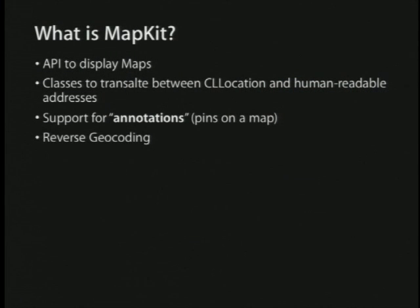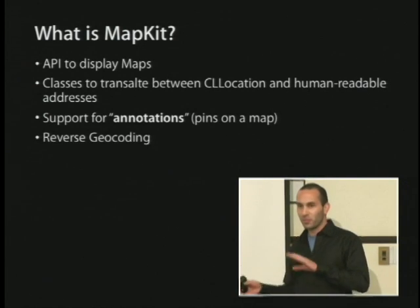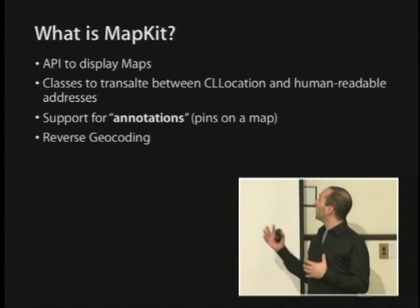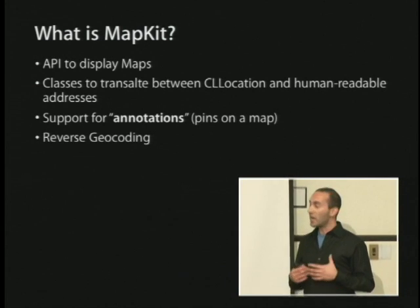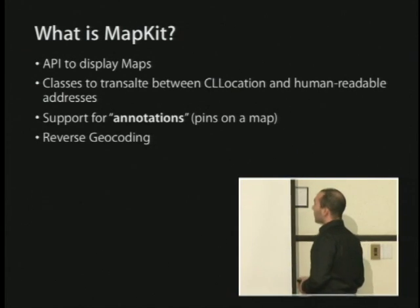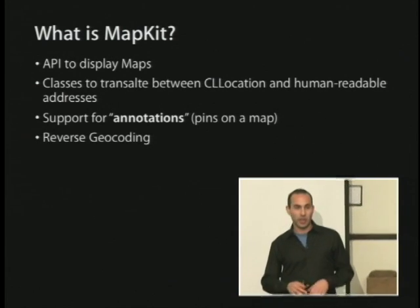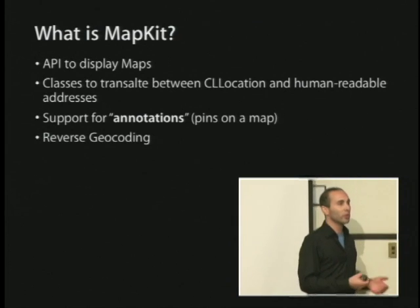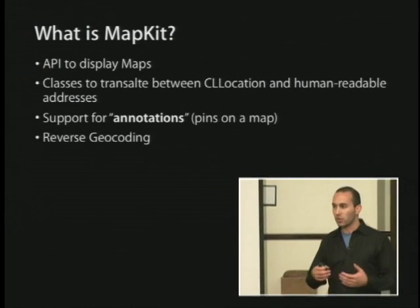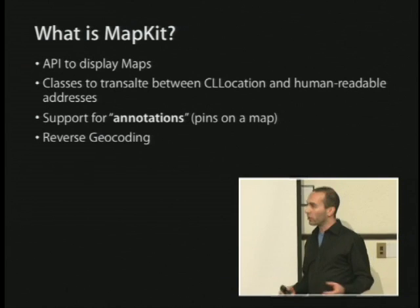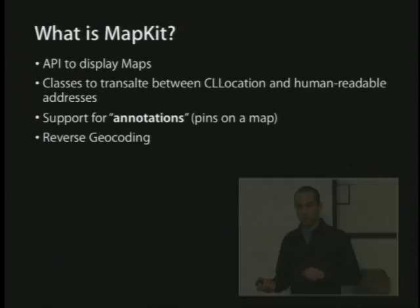So MapKit is an API to display maps. It helps you translate. There's a few different things it does. It helps you translate between CL Location — which, again, is like 29.663 latitude and something-something longitude — and a human-readable address. There is support for annotations, and annotations are pins on a map, so if you want to plot out restaurants or friends' houses, whatever it is, and reverse geocoding.